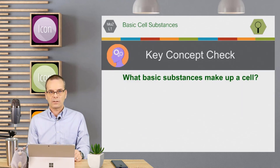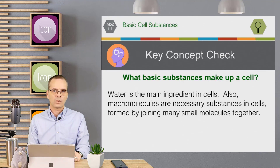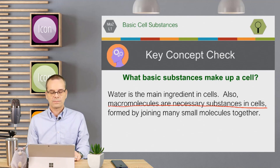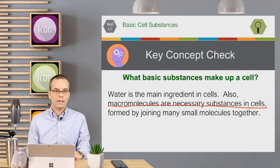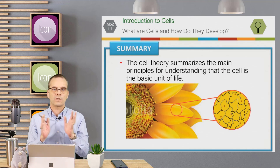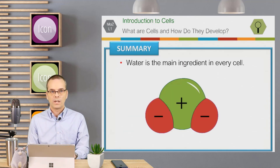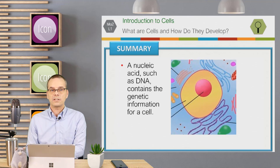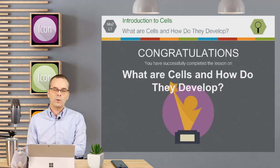The key concept check was to ask what basic substances make up a cell. Water is the main ingredient, but macromolecules are also necessary. In summary, cell theory summarizes the main principles for understanding cells as the basic units of life. Water is the main ingredient in every cell, and nucleic acids such as DNA contain all the genetic information for that cell. We hope you enjoyed the lesson on what are cells and how do they develop, and we will see you in the next lesson.